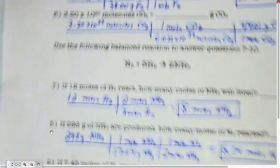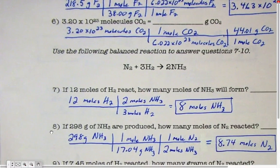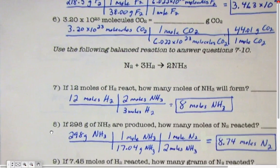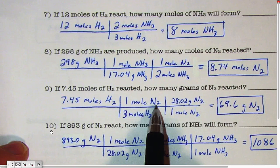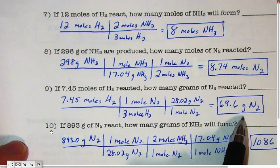And I did that, for example, in problem 9 here, where we had converted to moles of N2 the new chemical, and then we had multiplied by the molar mass to find the new mass.